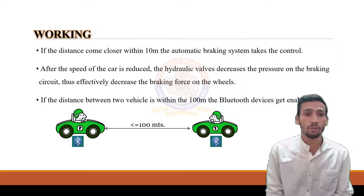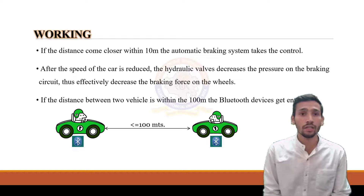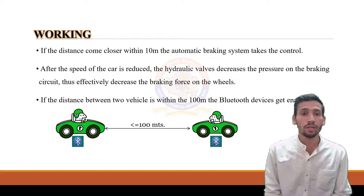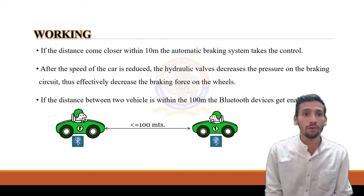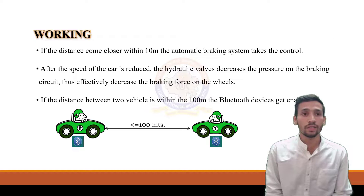Now we will talk about the working. If the distance comes closer within 10 meters, the automatic braking system takes control. The speed of the car is reduced and the hydraulic valves decrease the pressure on the braking circuit, effectively decreasing the braking force on the wheels. If the distance between two vehicles is within 100 meters, the Bluetooth device gets enabled.